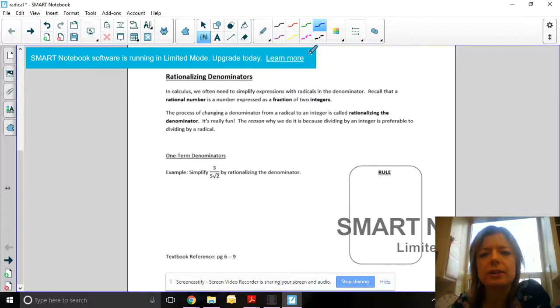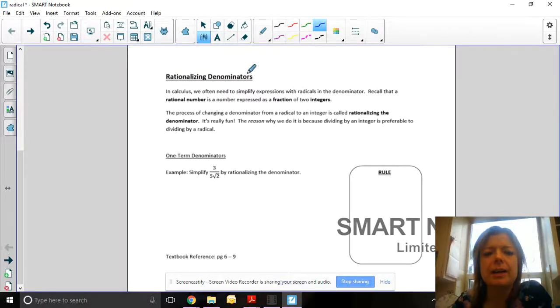Now we move on to rationalizing denominators. In calculus, we need to simplify expressions with radicals in the denominator. Recall that a rational number is a number expressed as a fraction of two integers. The process of changing a denominator from radical to an integer is called rationalizing the denominator. This is because we like to divide by an integer rather than a radical.